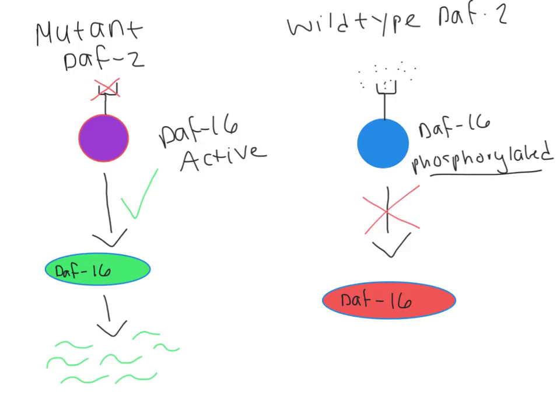Cynthia Kenyon found that strain E1370, which is a loss of function DAF2, lived twice as long as wild-type C. elegans. Suggesting that the target of this gene works to promote lifespan.